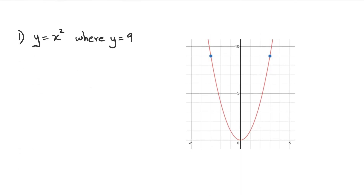I've drawn the graph here as a side by side so you guys can see what's happening. In the first question, what we want to know is to find the gradient where y equals nine for this graph, y equals x squared — that's the red parabola right there. Our first step is to figure out what the x values are, because when we differentiate x squared we are going to get two x.